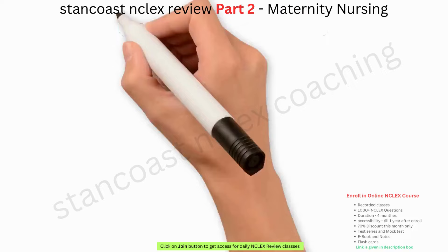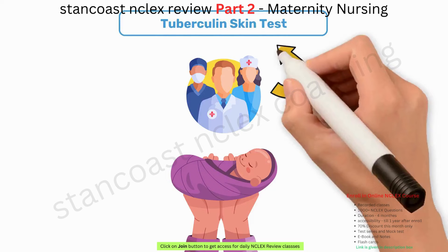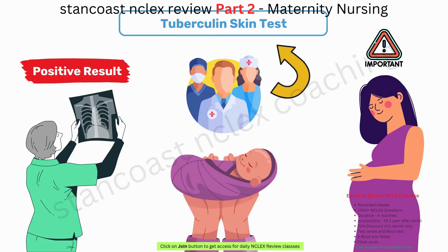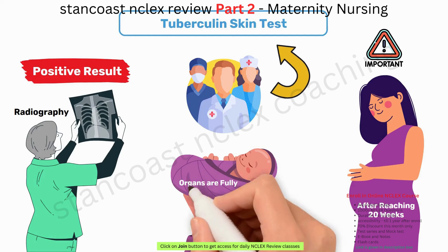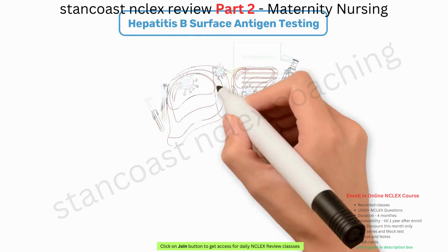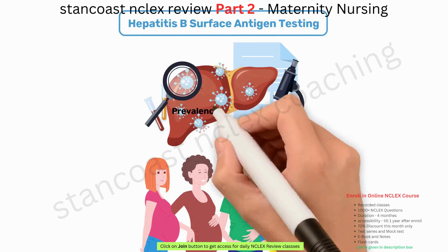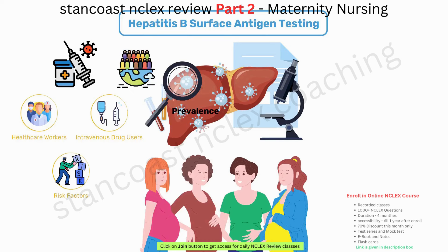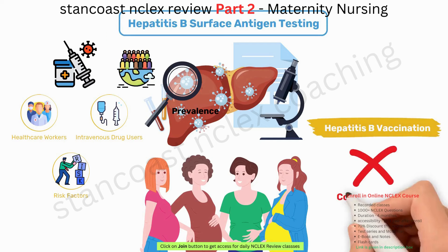Following childbirth, healthcare providers may opt for the tuberculin skin test. A positive result suggests the necessity of a chest radiograph; however, pregnant clients should only undergo radiography after reaching 20 weeks of gestation when fetal organs are fully developed. Those who convert to a positive result may be referred for postpartum medication-based treatment. Hepatitis B surface antigen testing is advisable for all pregnant women. In specific cases such as healthcare workers and intravenous drug users, hepatitis B vaccination may be recommended and is not contraindicated during pregnancy.